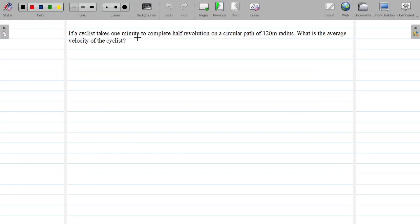If a cyclist takes one minute to complete half revolution on a circular path of 120 meter radius, what is the average velocity of the cyclist?